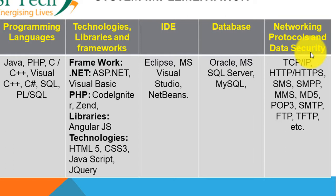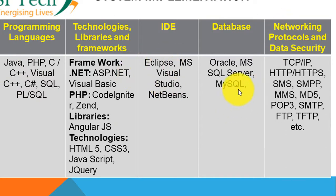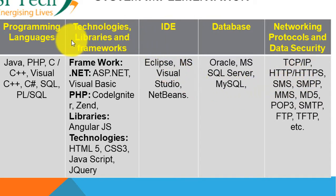To write software you need various things: programming languages, technologies, libraries and frameworks, an IDE (integrated development environment), databases, networking protocols, and data security. Taking the example of online banking, if you want to develop this application you could use Java or C#. If using Java, you would use Eclipse as your IDE, MySQL or Oracle as your database, and protocols like TCP/IP, HTTP, or HTTPS.